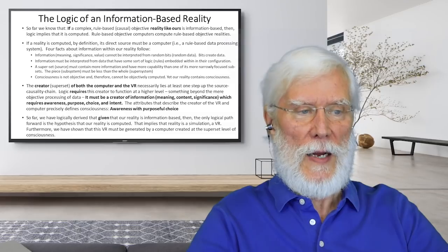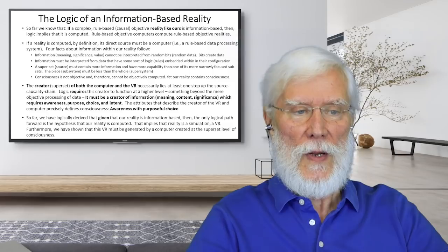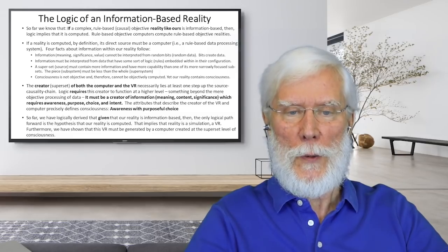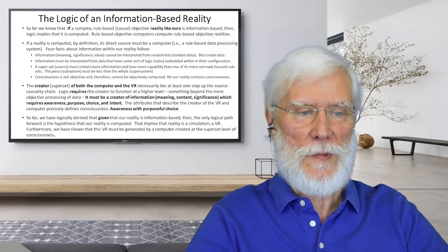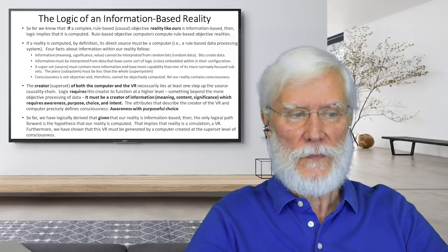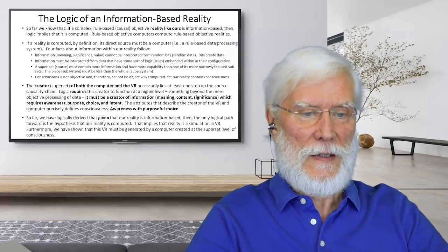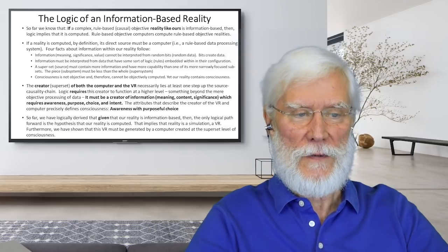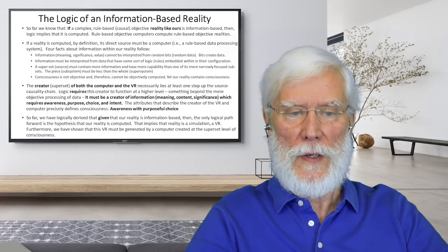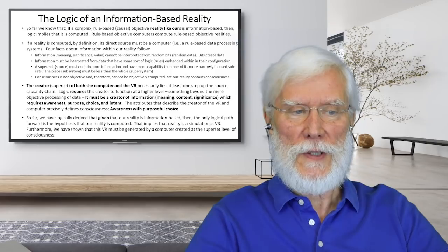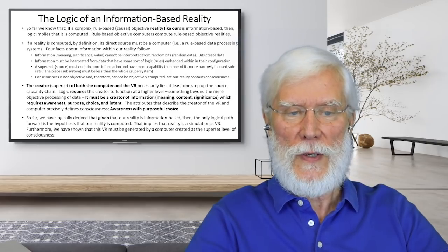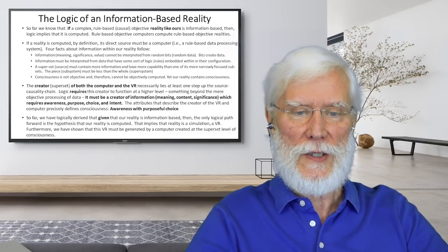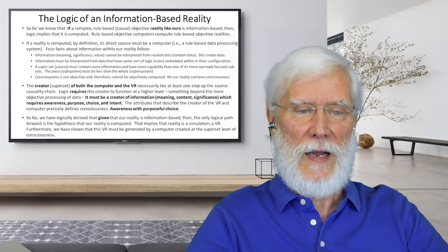The next thing to keep in mind: a superset — which we'll call the source — must contain more information and have more capability than one of its more narrowly focused subsets. The piece, the subsystem, must be less than the whole, the supersystem. And the last key point: consciousness is not objective, and therefore cannot be objectively computed. Yet our reality contains consciousness — we are conscious, we interact with other conscious beings — so consciousness is in our reality, but it cannot be computed.